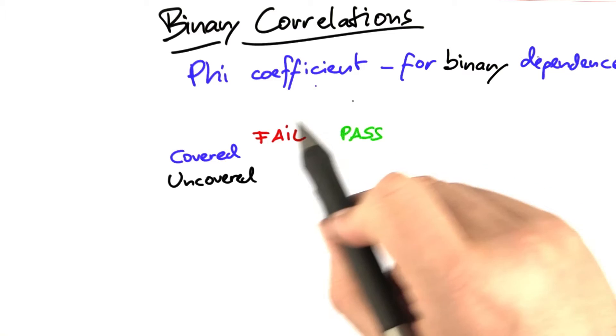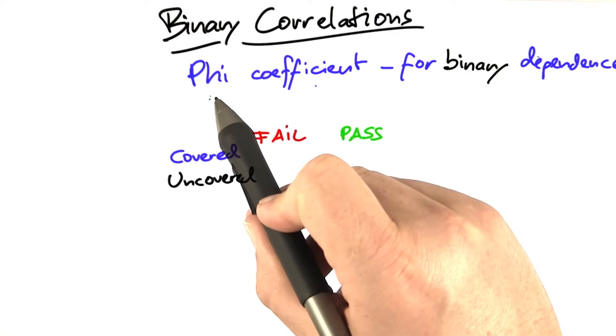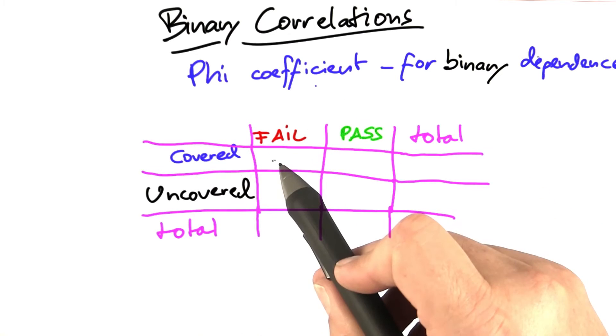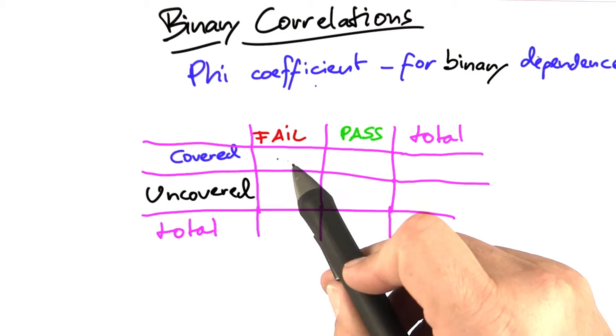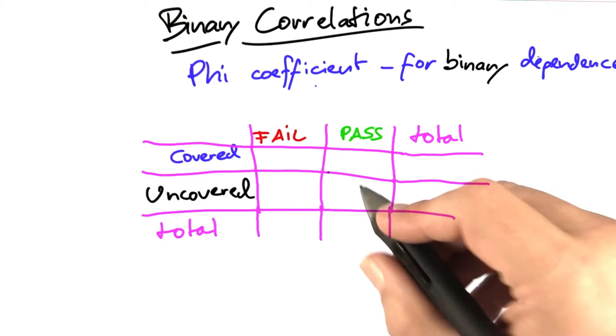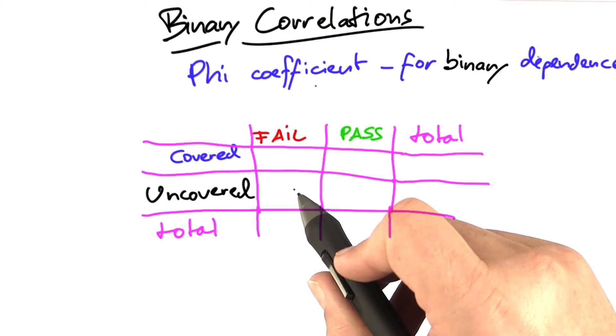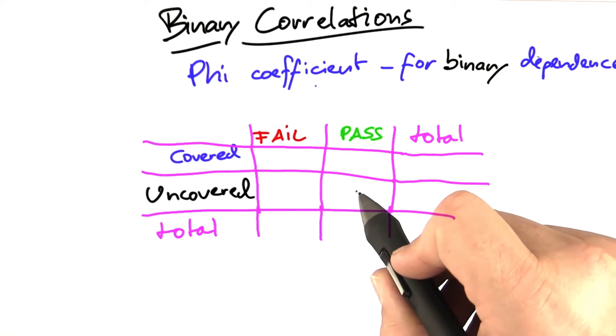But there's another measure for such correlation, and it was also invented by Pearson. It's called the phi coefficient. The phi coefficient starts with a table. In this table, you count how frequently a line was covered in failing runs, as well as in passing runs. And of course, you also count how frequently it was not covered in failing runs, as well as in passing runs.